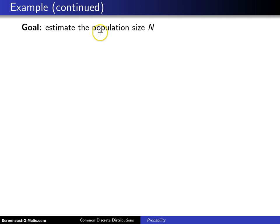The goal here is to estimate the population size capital N. So it's a bit of a more complex example than the initial hypergeometric example, which concerned eggs.